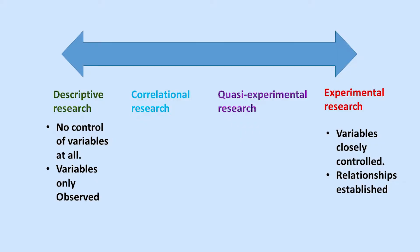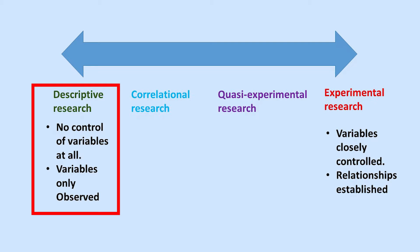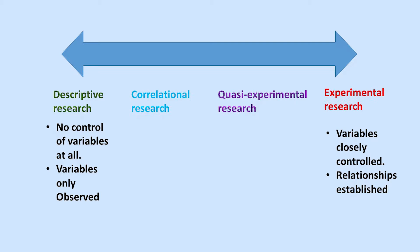The easiest way to understand the different approaches to quantitative research design would be by considering the extent to which a researcher seeks to control different variables during the research process. Considering the quantitative approaches as a continuum, one end will represent a design where the variables are not controlled at all and only observed, with the connection among such variables being described.